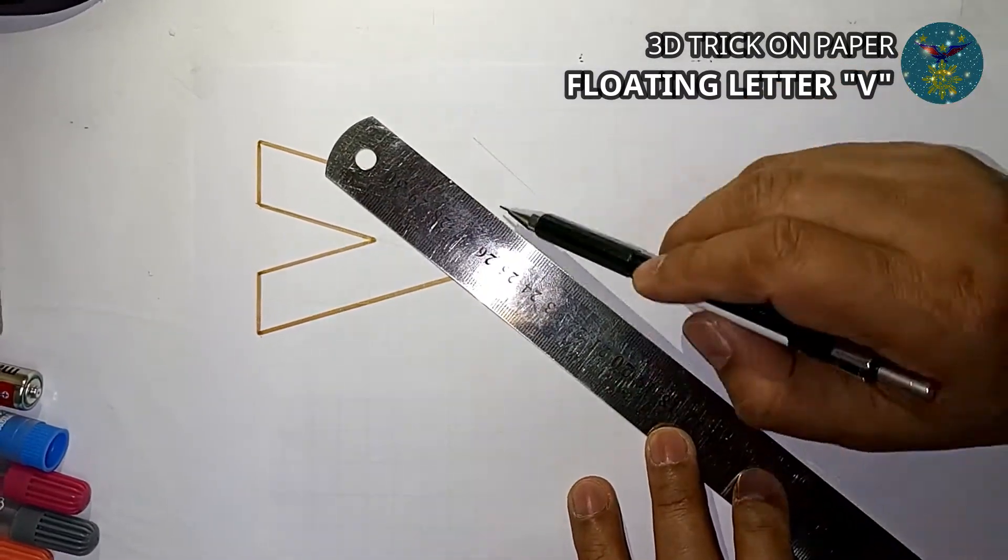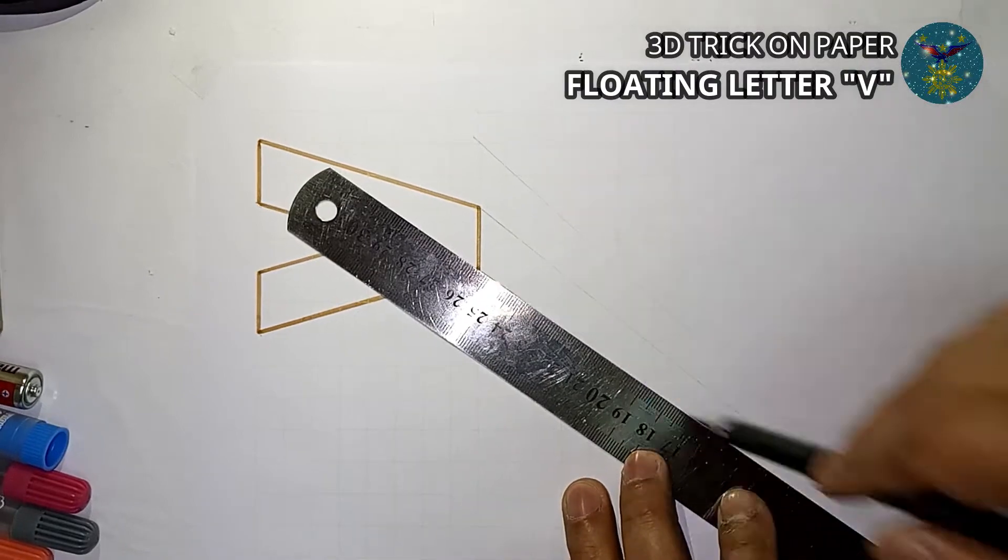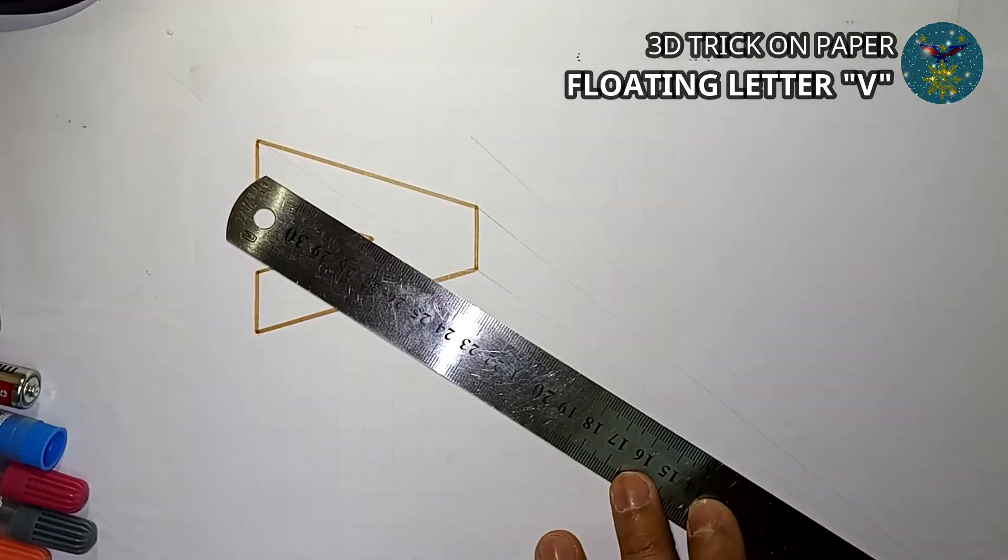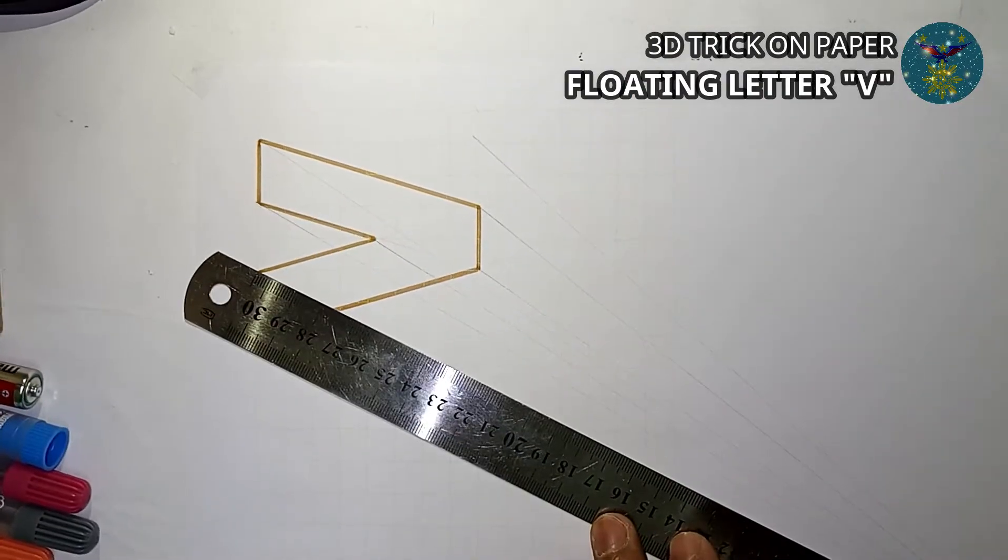Establish a vanishing point at the bottom left side of the paper for your object perspective. Then connect all points of intersection from your object to the vanishing point.